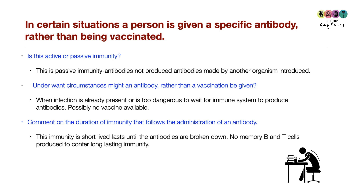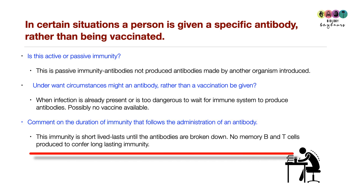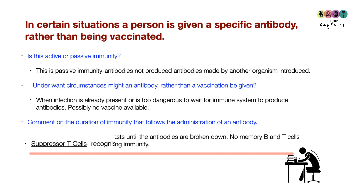What is the duration of immunity following administration of an antibody? The immunity is short-lived — it only lasts as long as those antibodies remain in the body before being broken down. Long-term immunity requires the production of memory B cells and memory T cells. When pre-made antibodies are given, those memory cells are not produced, so lasting immunity is not established.